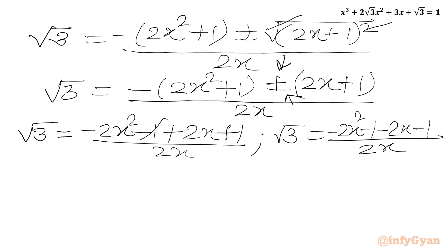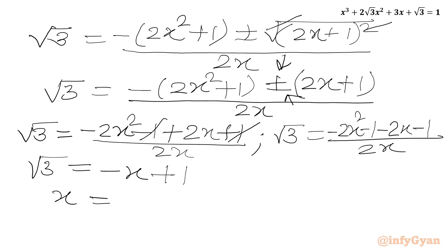Dividing the numerator by 2x in the first equation, the +1 and −1 cancel and we get −x + 1 = √3. Taking −x to the right-hand side, we get our first real solution: x = 1 − √3.